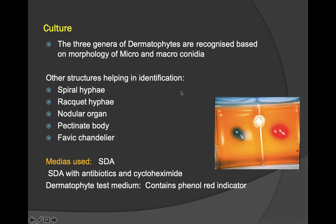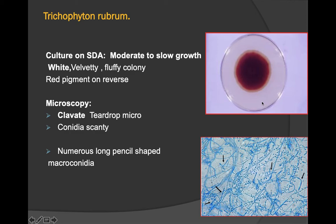In culture, the three genera of dermatophytes are recognized based on morphology of micro- and macroconidia. Different structural types include spiral hyphae, racket hyphae, nodular organs, pectinate bodies, and favic chandeliers. The media used is Sabouraud's dextrose agar (SDA); SDA with antibiotics and cycloheximide is also used, as well as dermatophyte test medium containing phenol red indicator.